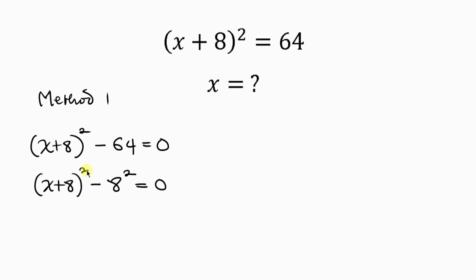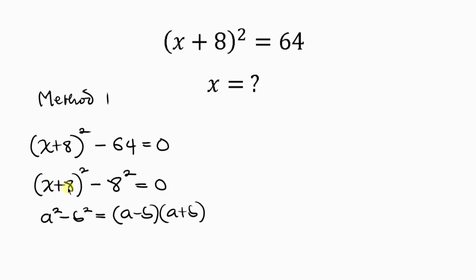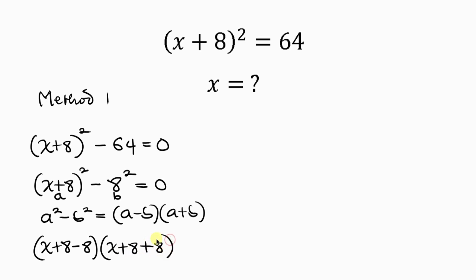64 is the same as 8 squared, so this is equal to 0. We now have a difference of two squares. The identity is a² minus b² = (a − b)(a + b). Comparing, X + 8 represents a and 8 represents b, so we write (X + 8 − 8)(X + 8 + 8).